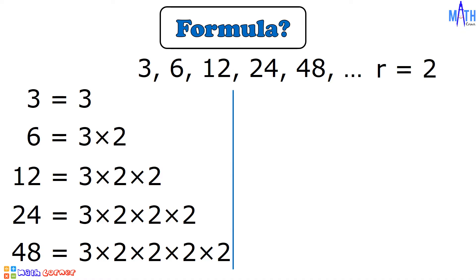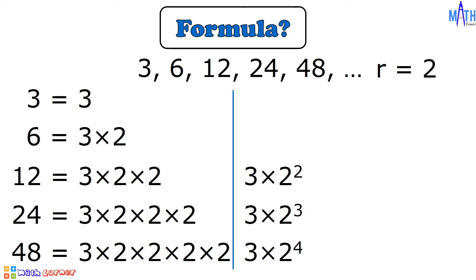If we write these terms in exponential form: a sub 5 is equal to 3 times 2 raised to the appropriate power; a sub 4 is equal to 3 times 2; a sub 3 is equal to 3 times 2 raised to 1; and a sub 1 is equal to 3 times 2 raised to 0.